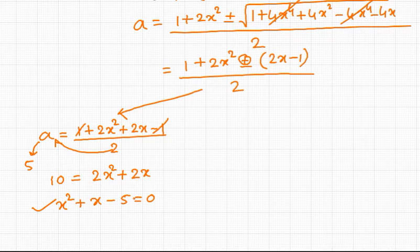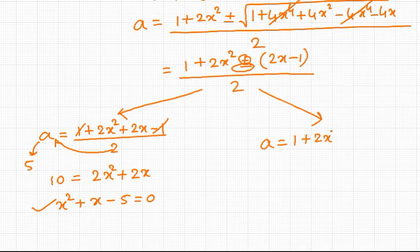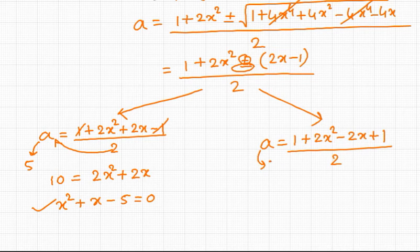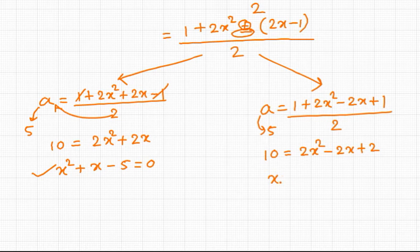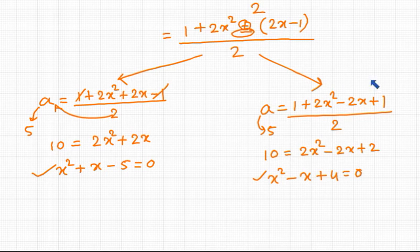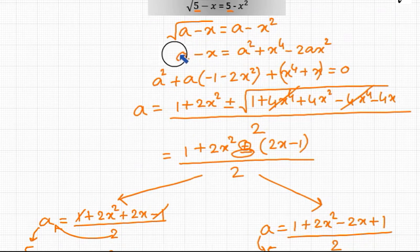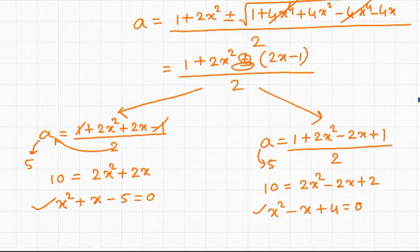This is going to be one of the factors of the equation. Considering the negative sign, we get another value of a: (1 plus 2x squared minus 2x plus 1) divided by 2. Plugging in 5 in place of a and cross-multiplying gives 10 equal to 2x squared minus 2x plus 2, so another factor of the original equation is x squared minus x plus 4 equals 0. These two are the factors of the bi-quadratic equation in x.